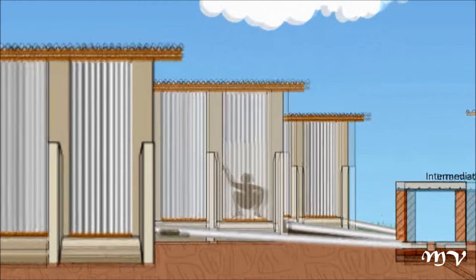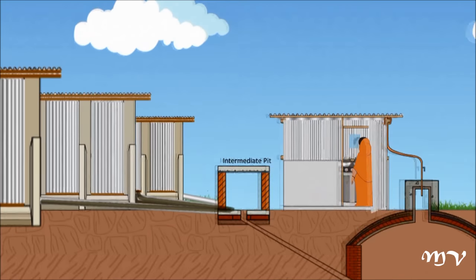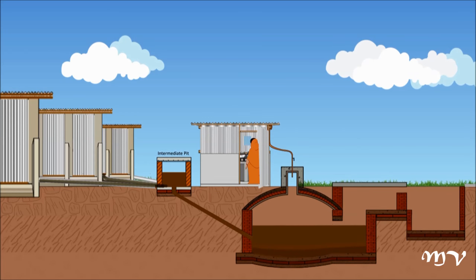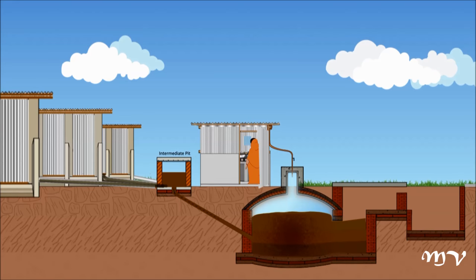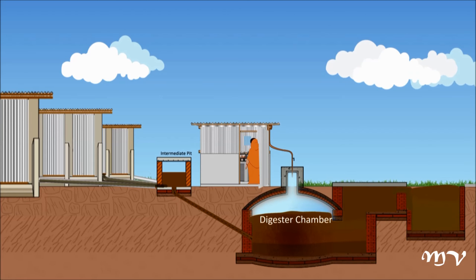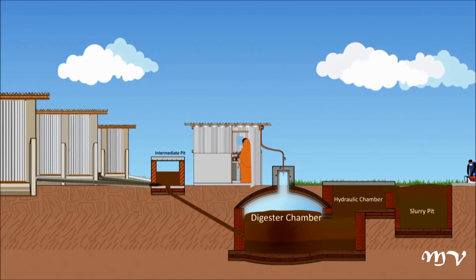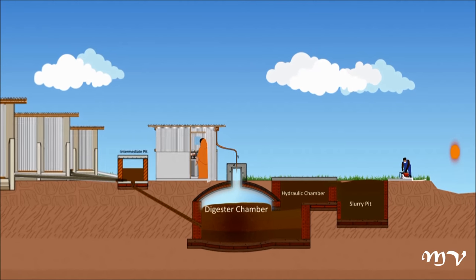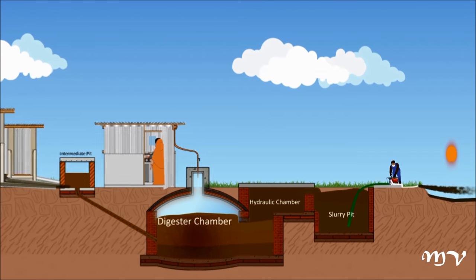All human excreta first come into the intermediate pit from the connected latrine blocks, then they are received by the digester. In the digester, three degradation steps take place in anaerobic conditions: hydrolysis, acidification, and methanization. In Bangladesh's climatic conditions, it takes 20 to 30 days to get the first gas production, which contains 60 to 70 percent methane. The substance resulting from this process goes to the hydraulic chamber where aerobic degradation occurs, then it overflows to the slurry pit.